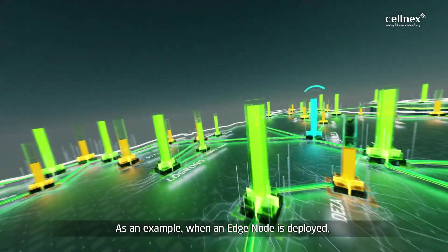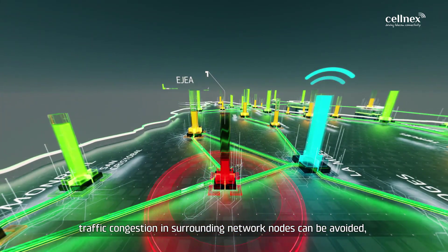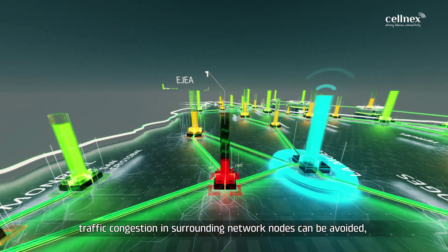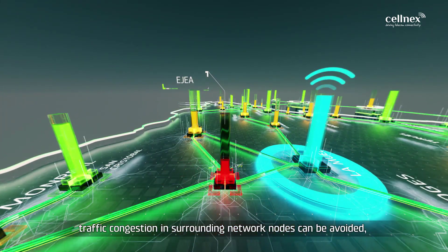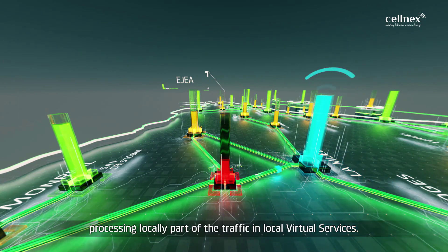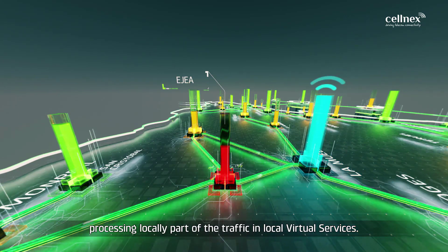As an example, when an Edge node is deployed, traffic congestion and surrounding network nodes can be avoided, processing locally part of the traffic and local virtual services.